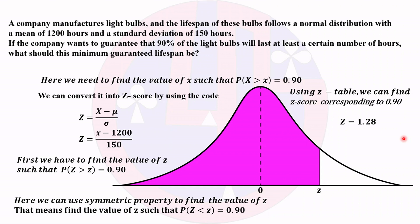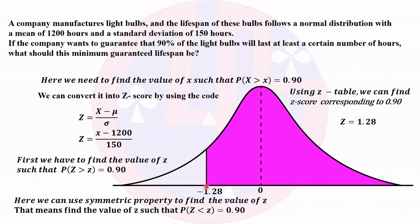Now moving back to the previous diagram: since we used the symmetric property, the Z value of 1.28 was positive in the mirrored case. Applying symmetry back to the original setup, the value becomes negative, so Z = −1.28.